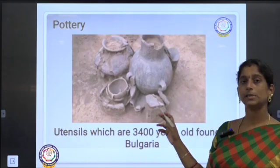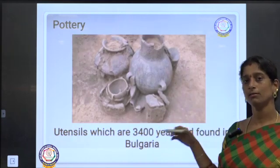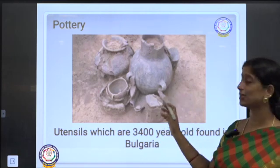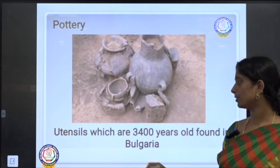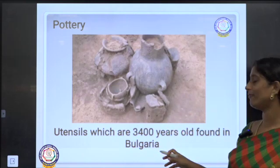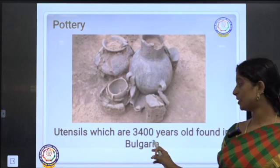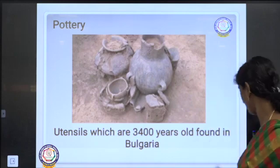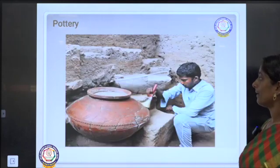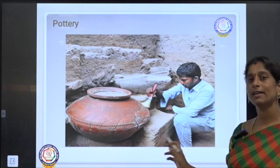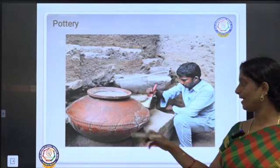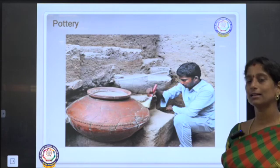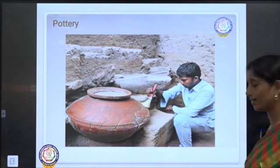Pottery — the vessels they used in their period. It is broken and damaged, but still the shape can be seen even now. This utensil was found in Bulgaria and was used 3,400 years ago — hard to imagine! This pottery was found in Kiradi, Tamil Nadu, and we can see the archaeologist cleaning and making it visible for us.